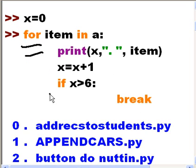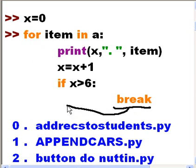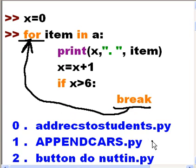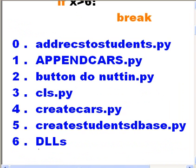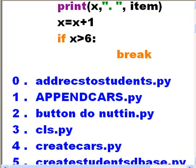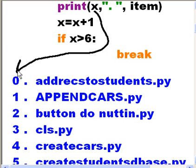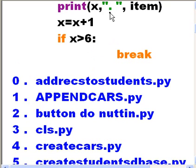So I now run the program and it gives me zero dot addrecstostudents.py. There's my x, there's my period, and there's the name of the item in the list directory.